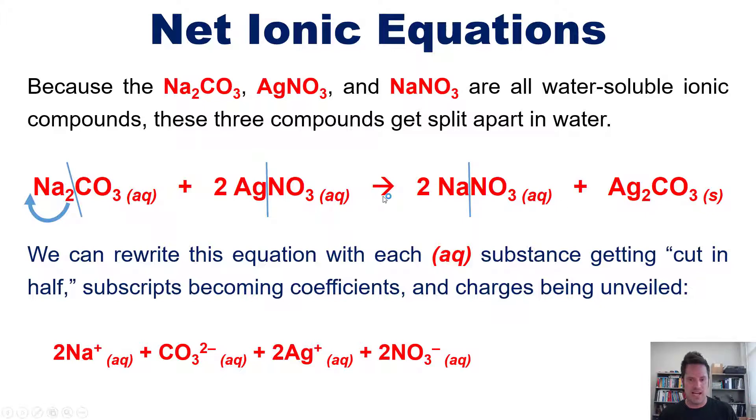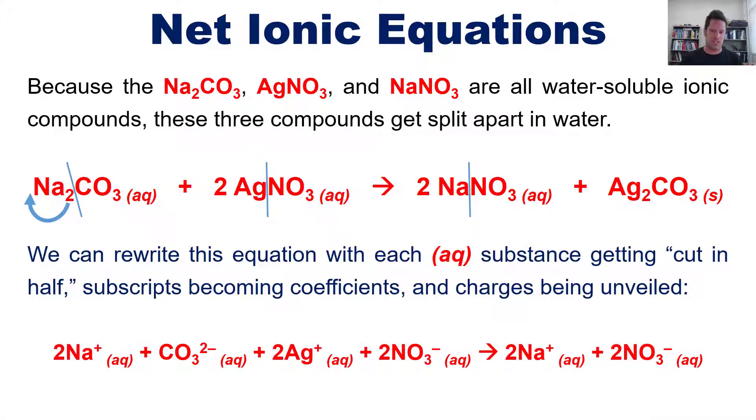We now write the yield sign, and then over here with the sodium nitrate, analogous thing. We have 2 Na pluses and 2 NO3 minuses. Now, the silver carbonate over here is a solid precipitate, which means that it does not dissolve in solution. It does not have an AQ written next to it. So, it just remains exactly as is untouched. Okay?